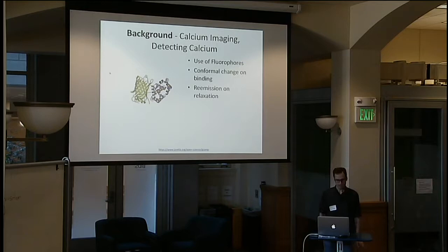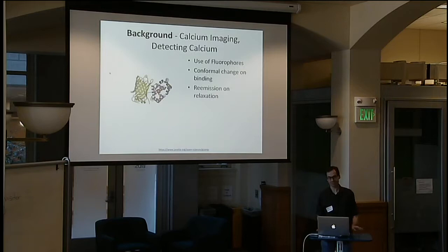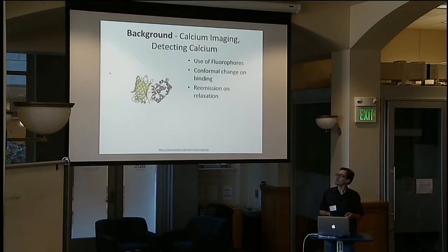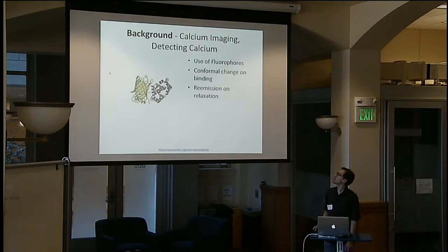To give a rough overview — I'm not a biologist so this will be really rough — what's used is something called a fluorophore. These are proteins that have some light reflected on them and then emit some lower frequency light. Basically what happens behind the scenes is they undergo some conformational change, bind to some ion, and then perform re-emission relaxation.